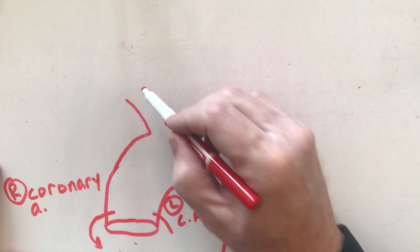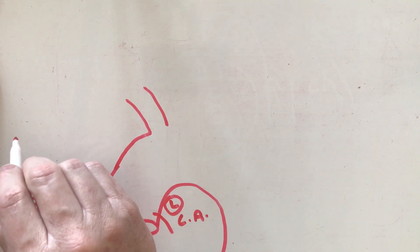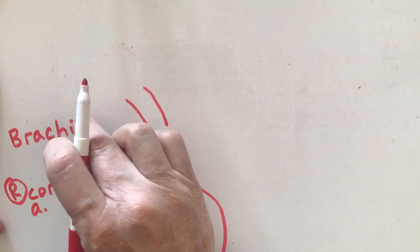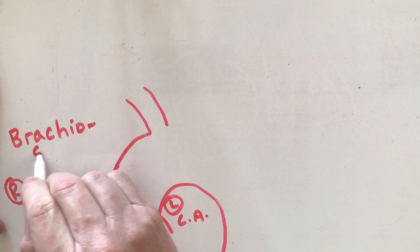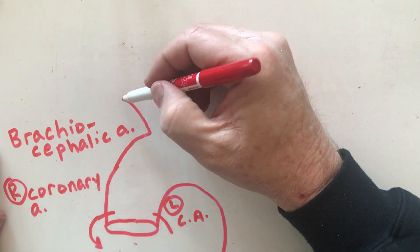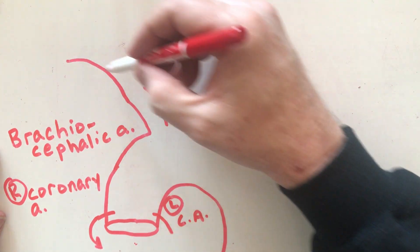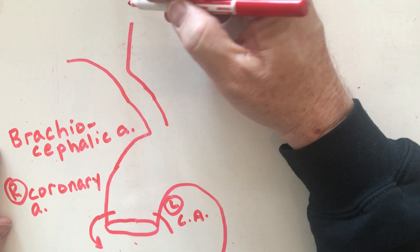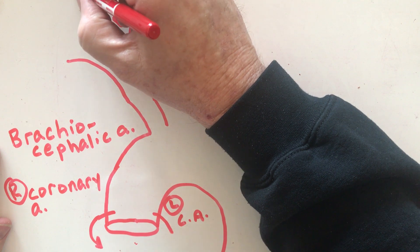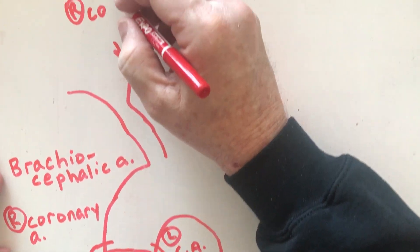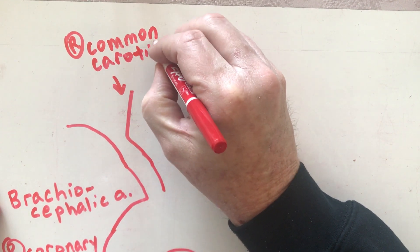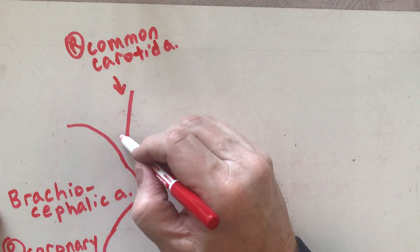Coming off the aortic arch, the first branch is called the brachiocephalic trunk. 'Brachio' means arm and 'cephalic' means head. The brachiocephalic artery goes up and then has an artery come off of it going up into the head — this is known as the right common carotid artery, which goes up into the head.